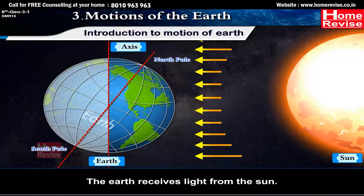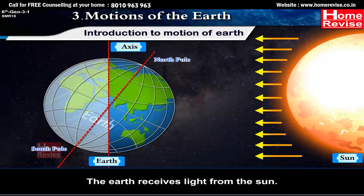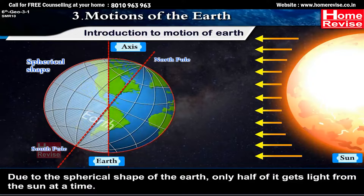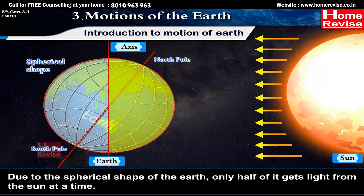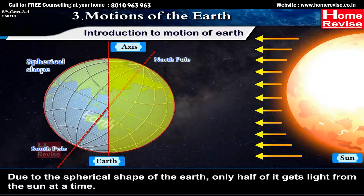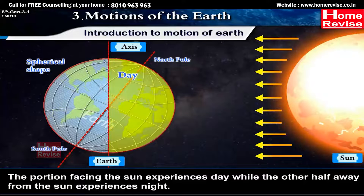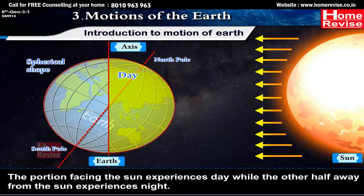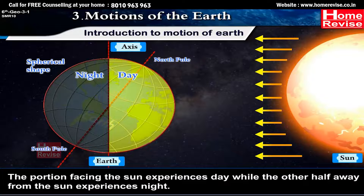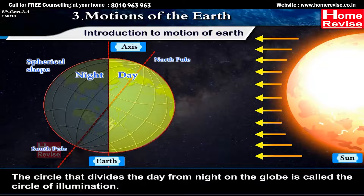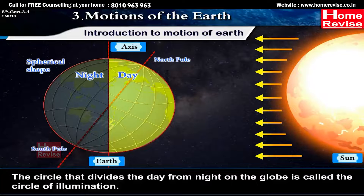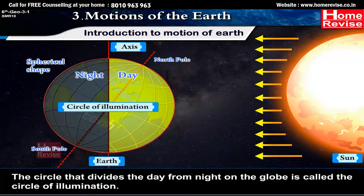The Earth receives light from the Sun. Due to the spherical shape of the Earth, only half of it gets light from the Sun at a time. The portion facing the Sun experiences day, while the other half away from the Sun experiences night.